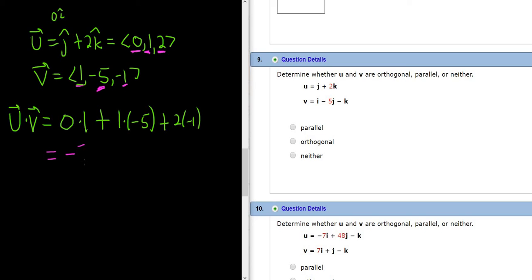This is negative 5 minus 2 equals negative 7. This is not equal to 0, so they are not orthogonal. Orthogonal is the same as perpendicular, so it's not that one.